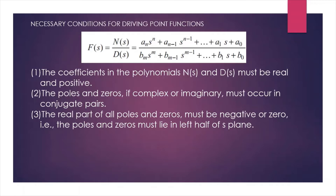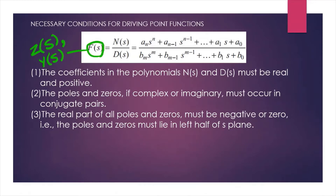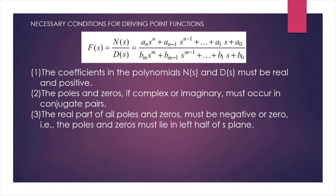What are the necessary conditions for a function to be a driving point function? Any circuit function like impedance or admittance is represented by f, with numerator polynomial N(s) and denominator polynomial D(s) as shown. If this is the function, it must satisfy the following conditions.